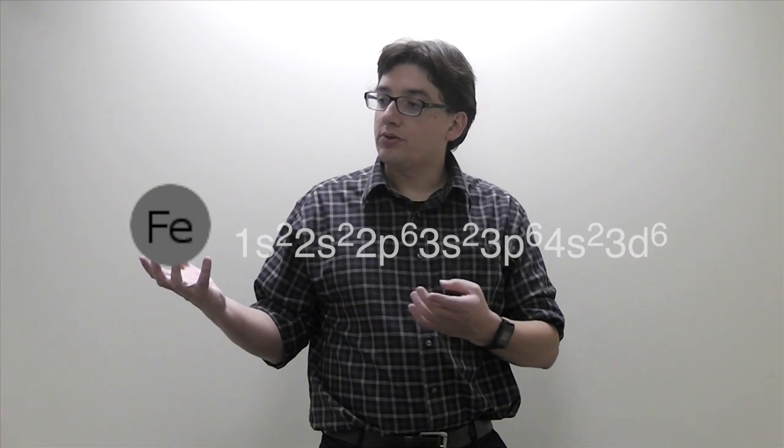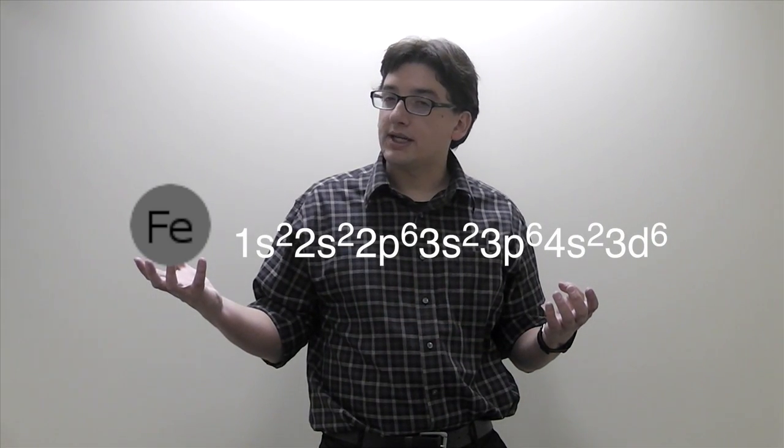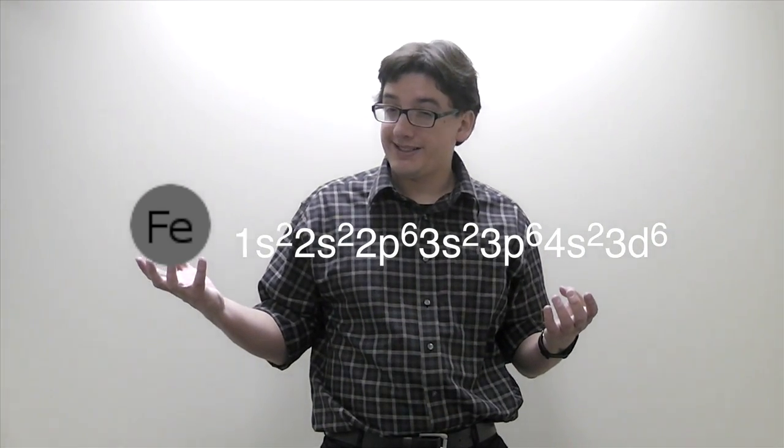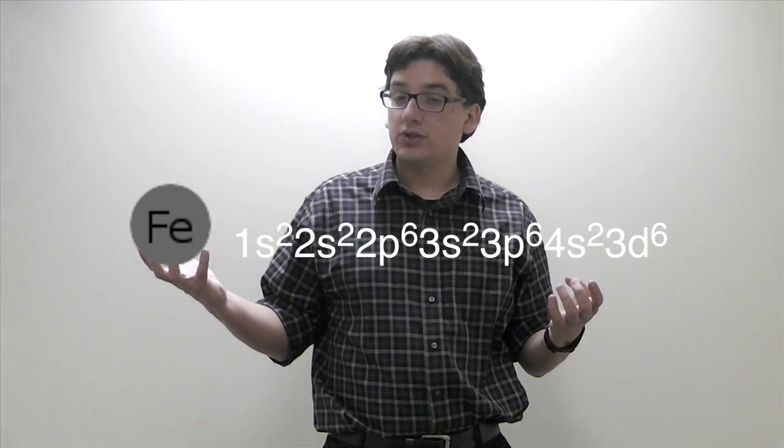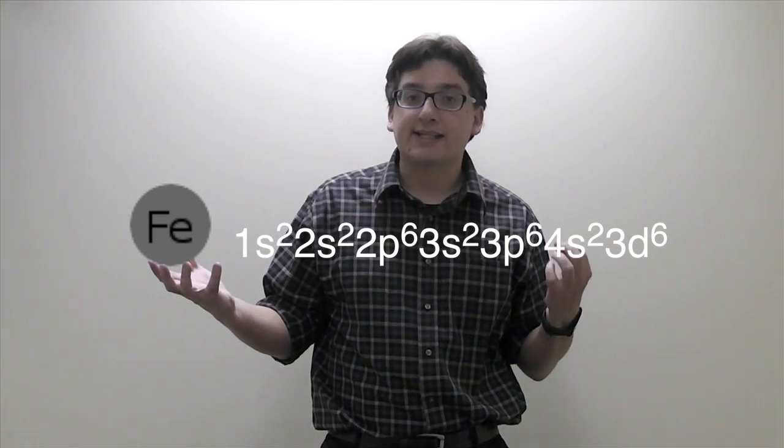Let's look at iron. Iron's electron configuration is 1s2, 2s2, 2p6, 3s2, 3p6, 4s2, 3d6, right?